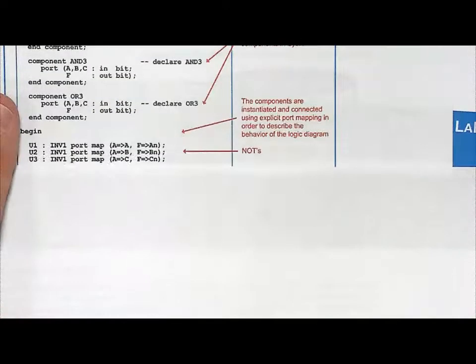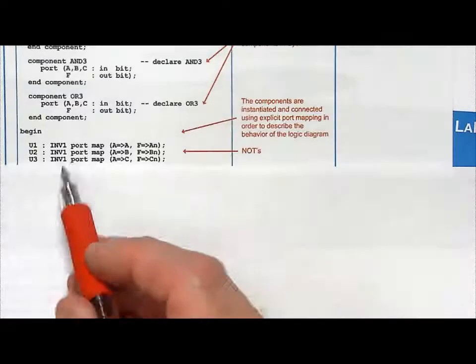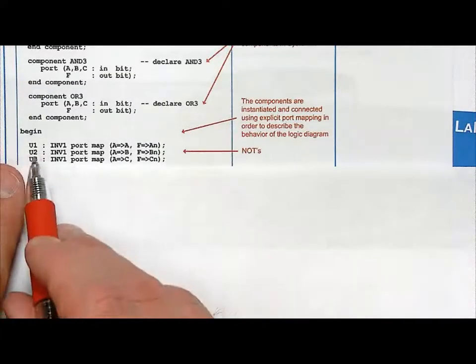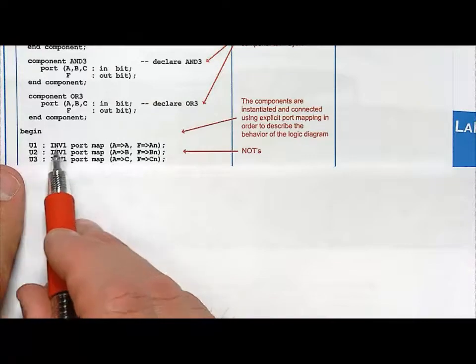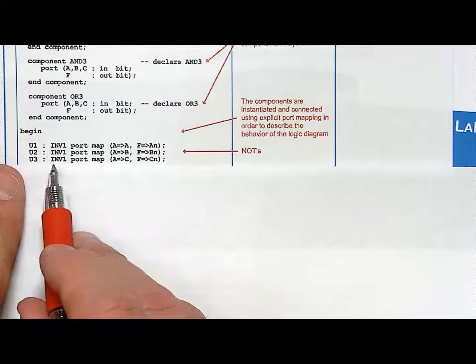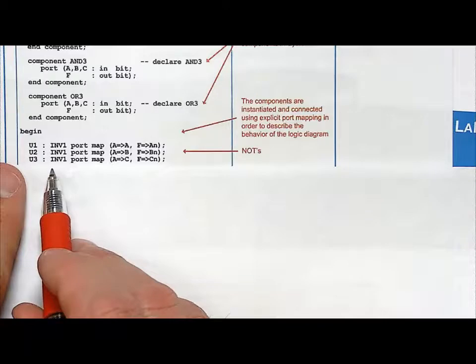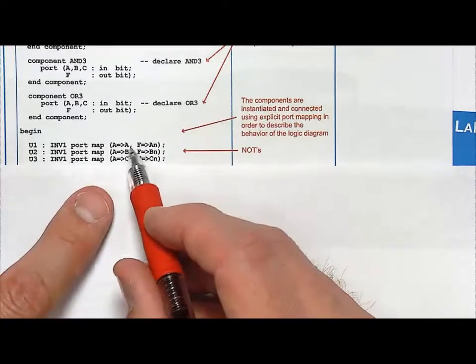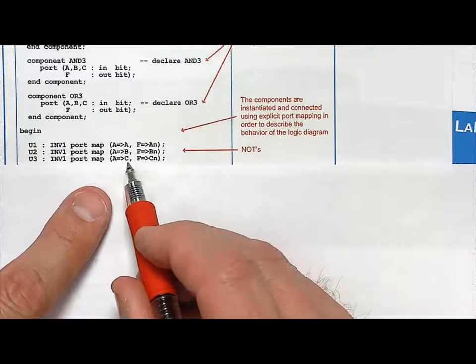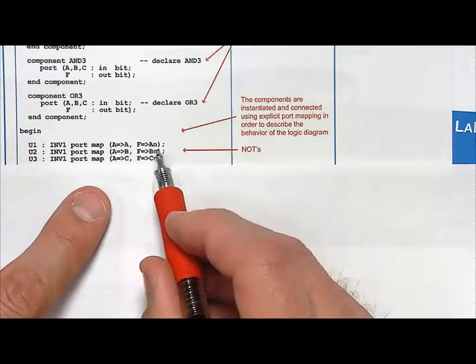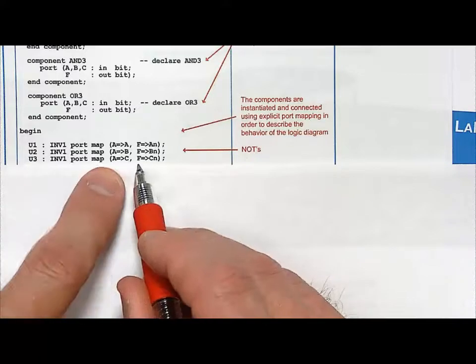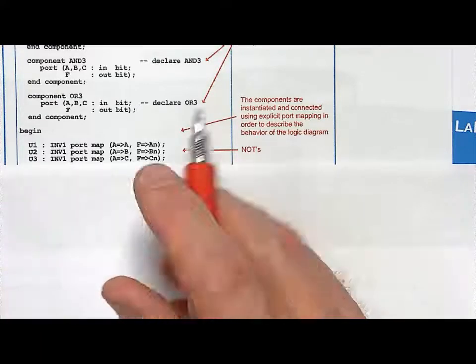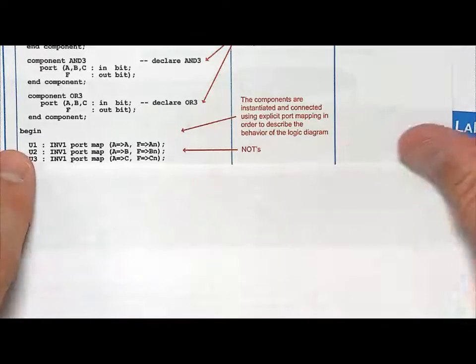So now let's look at three of these inverters. Now this really illustrates how we needed that instance name. So I just said U1, U2, and U3. And that's to give unique identifications to these three subsystems that we instantiated, these three components. Notice that I hooked them up. I had A, B, and C as the signals coming into my three inverters. And then I had AN, BN, and CN. But look at how the ports were always A and always F. And that's because that's what the ports were, that lower level instance.